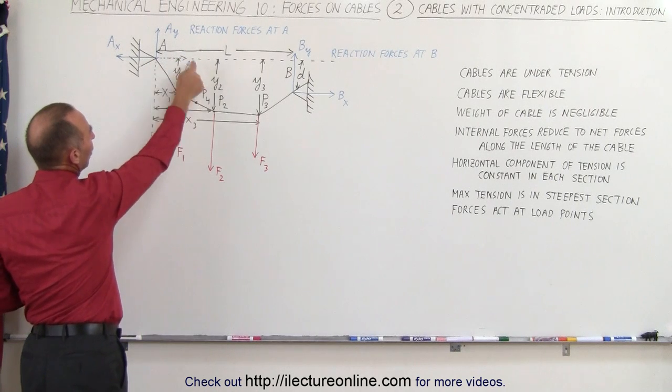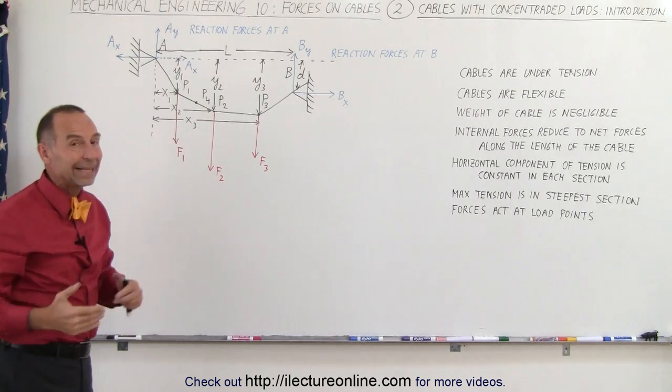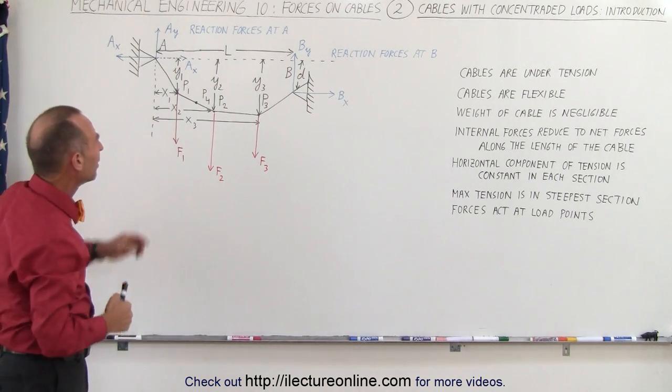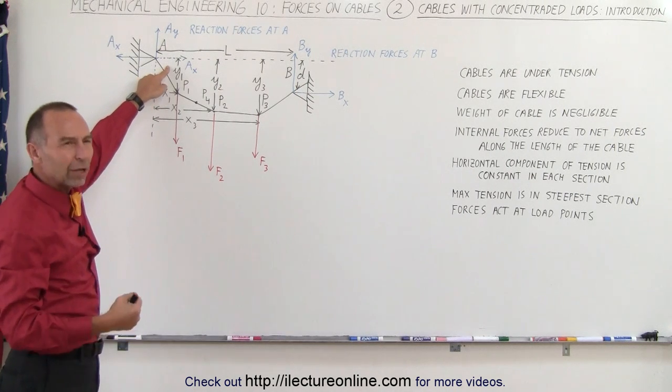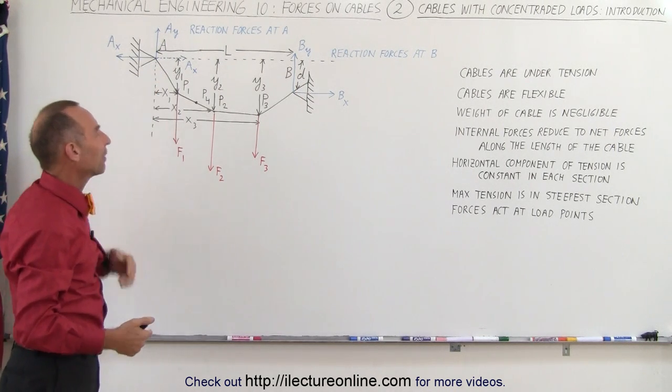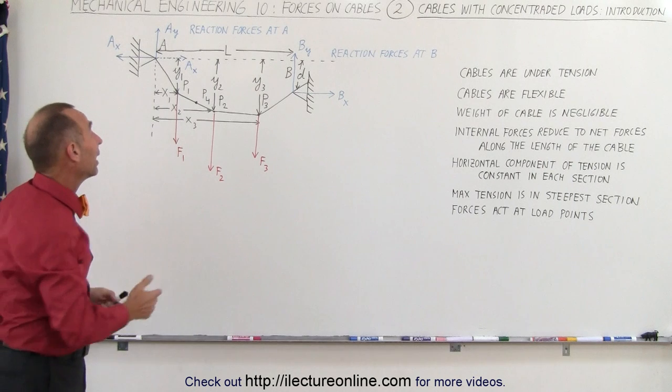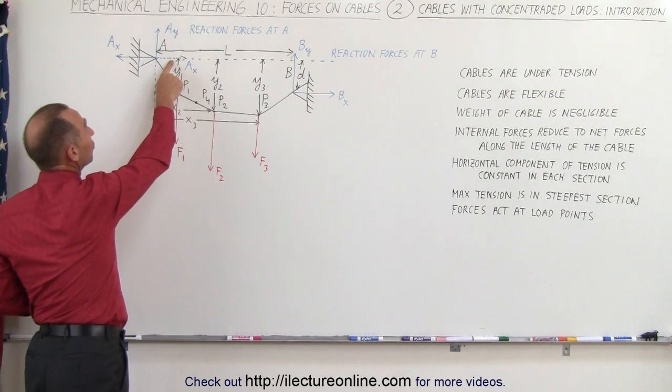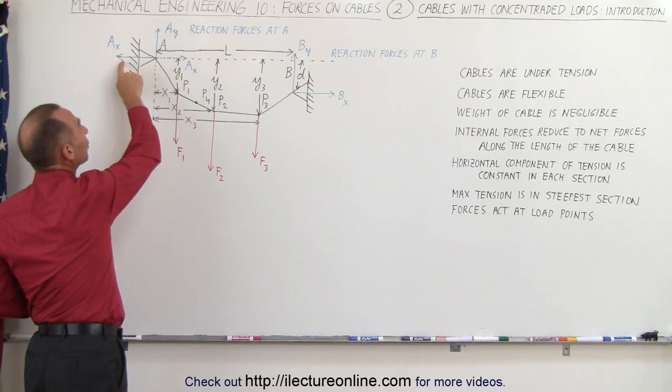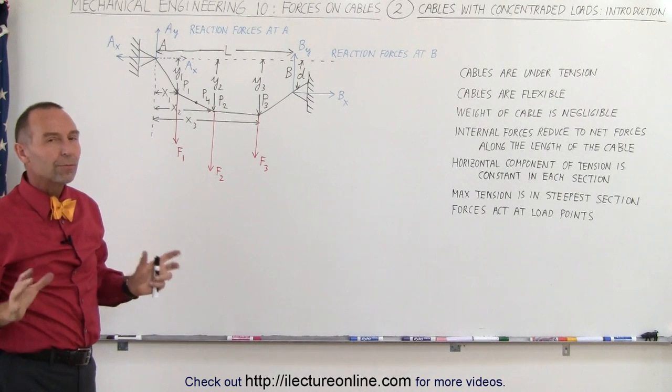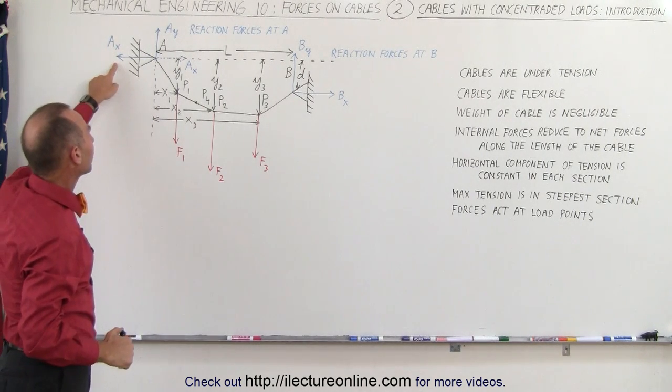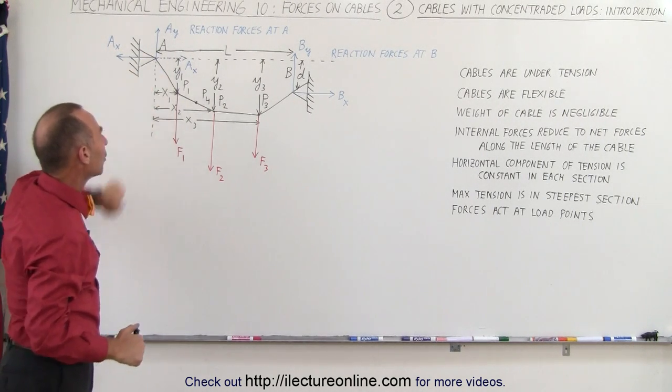If you draw it like this and you solve for A sub X, you will typically get a negative value, which makes it a little bit confusing. Why do you get a negative value pointing in the positive X direction? And by the way, we know that this is not the direction of the reactionary force. We really know that it's in this direction. So to make things a little simpler, I like to write it like this, but you could do it either way.